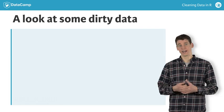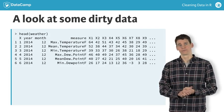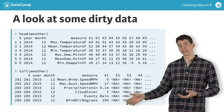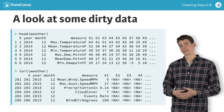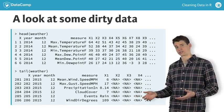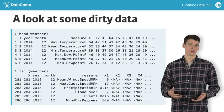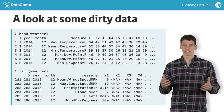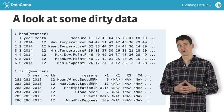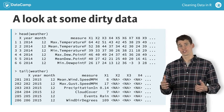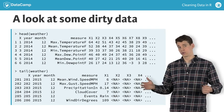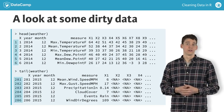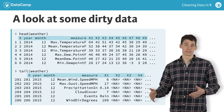Let's kick things off by looking at an example of dirty data. You're looking at the top and bottom, or head and tail, of a data set containing various weather metrics recorded in the city of Boston over a 12-month period of time. At first glance, these data may not appear very dirty. The information is already organized into rows and columns, which is not always the case. The rows are numbered and the columns have names.